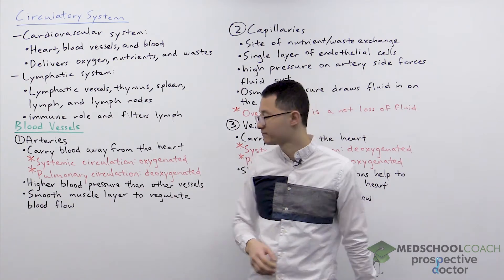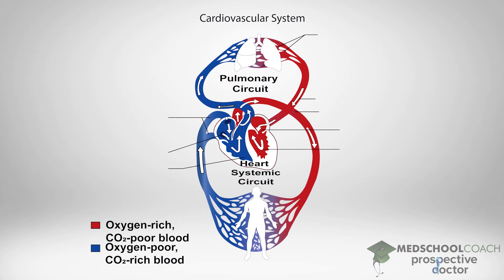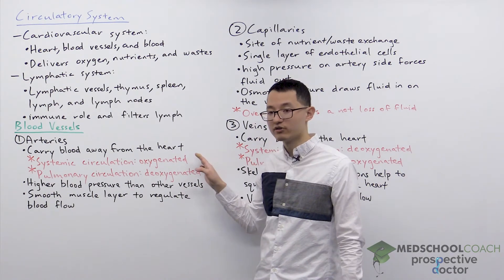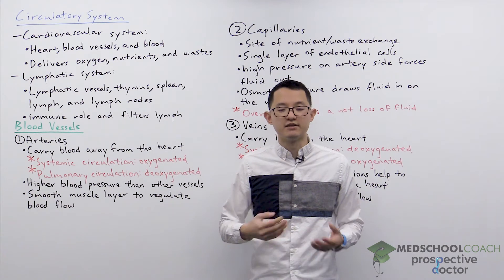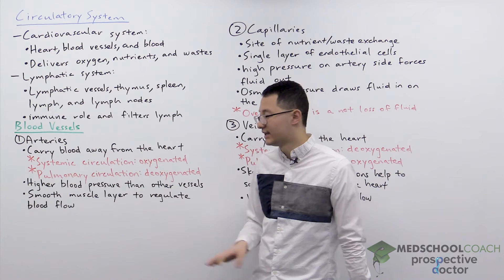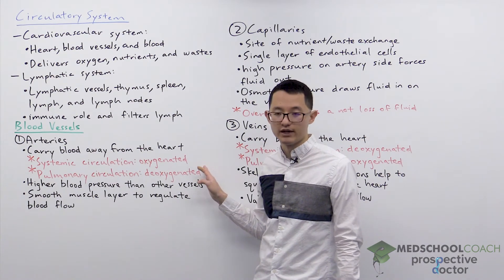In this diagram, the systemic circulation is carrying blood to the different tissues and organs in the body — in this case these arteries are carrying oxygenated blood. There is also a pulmonary circulation, where the arteries are carrying deoxygenated blood to the lungs so that the blood can get oxygenated. The important point is that arteries can carry both oxygenated and deoxygenated blood depending on the circulation, and the commonality is that arteries carry blood away from the heart.